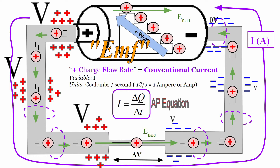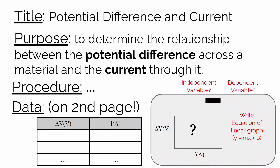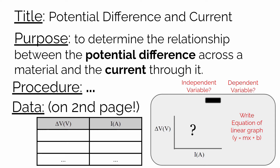In our investigation, you're going to be looking at just that relationship. We're calling this the potential difference and current lab because those are the two variables we're measuring to find out how they're related. Our purpose statement is to determine the relationship between the potential difference across a material or a particular element inside of a circuit and the current that's actually flowing through it.